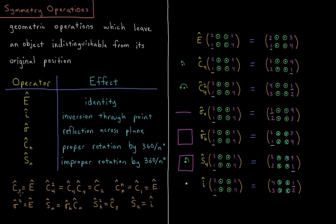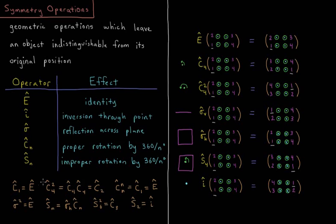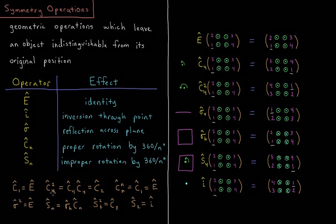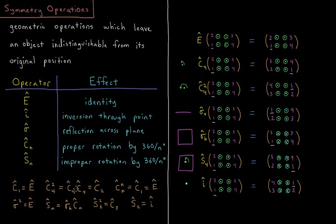By these definitions, you can see that c1 equals e. Rotating by 360 degrees is the same as doing nothing, so 360 over 1 is 360 degrees. The square of an operation is when you do it twice, the cube is doing it three times, so c2 equals c4 squared.